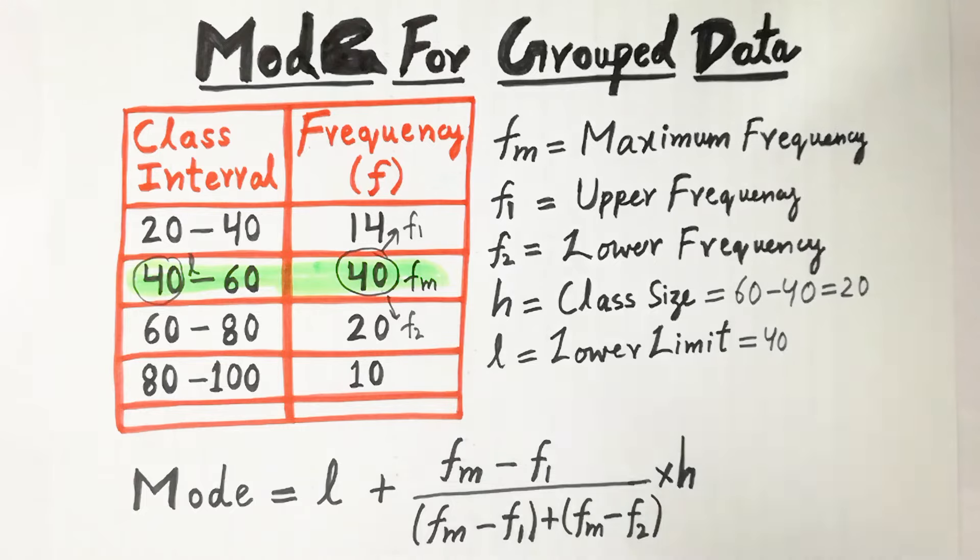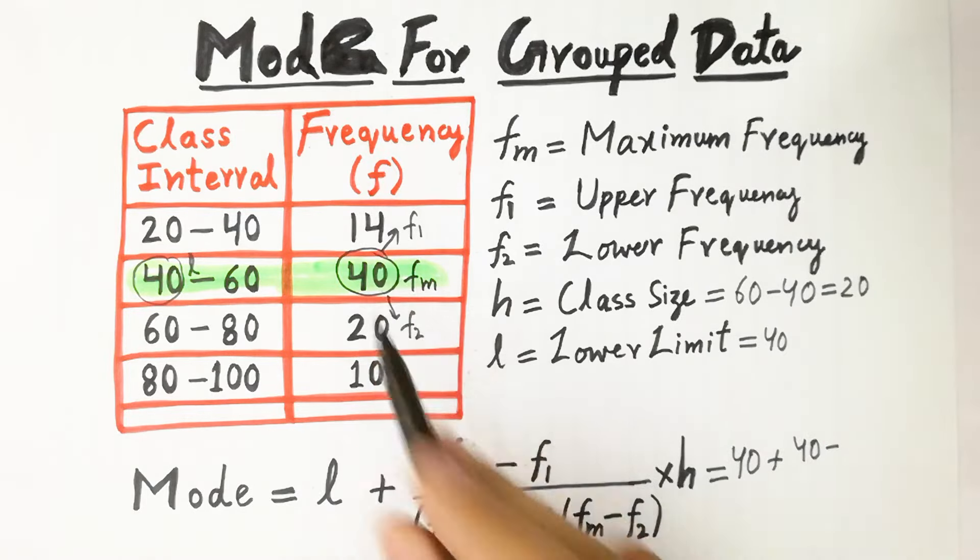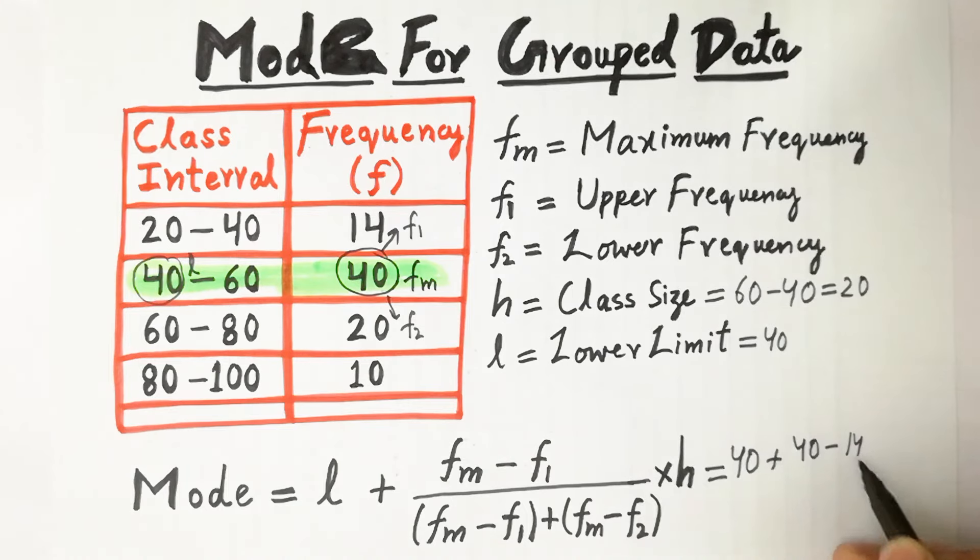And maximum frequency is given here, Fm. Just put the values here. L is given here, 40 plus Fm, Fm is given here, 40, maximum frequency, minus F1 is here, upper value, 14, divided by,